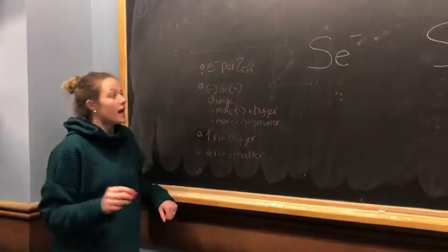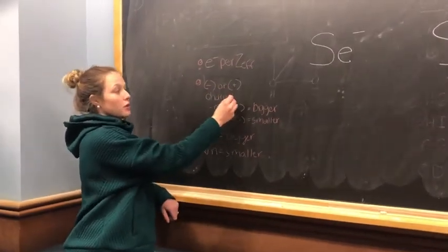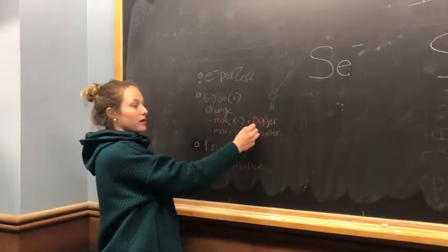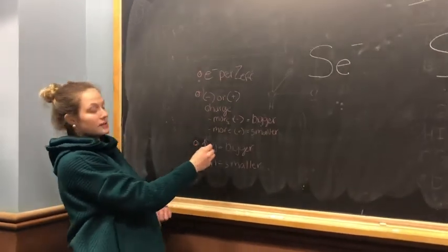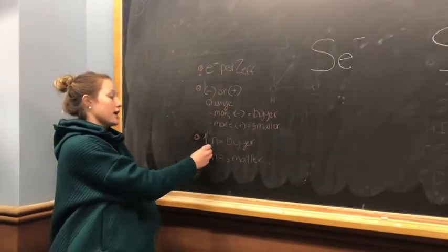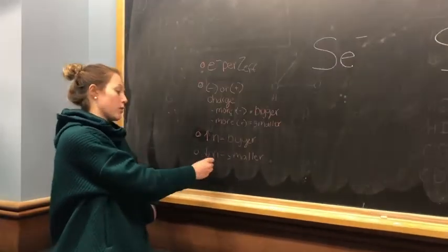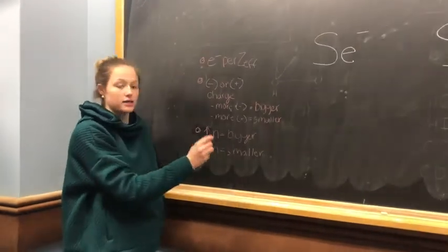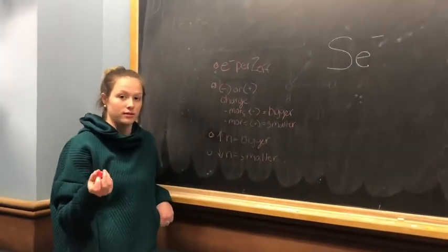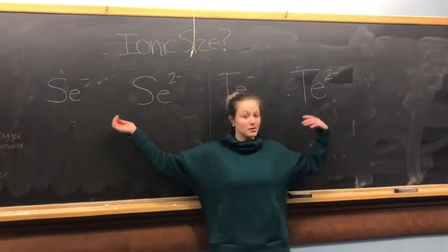Ionic size depends on the following: electrons per Zeff, and positive or negative charge. The more negative the charge, the bigger the ionic size. The more positive the charge, the smaller the ionic size. When n increases, ionic size increases, and when n decreases, ionic size decreases — so it's a positive relationship with n.